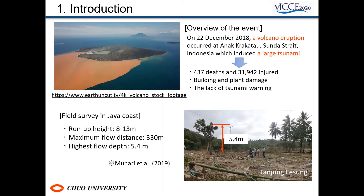In December 2018, a destructive tsunami was induced by Anak Krakatau volcano's eruption in Sunda Strait, Indonesia. In the Sunda Strait coastal area, more than 400 people were killed by the landslide tsunami. Moreover, it is difficult to predict a non-seismic tsunami, and there is a possibility that the lack of a tsunami warning may have led to many human casualties.